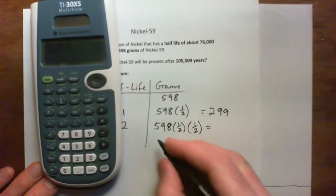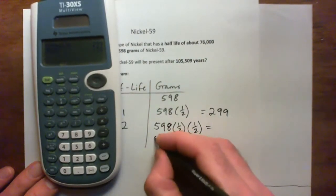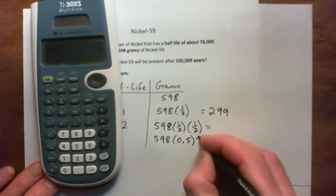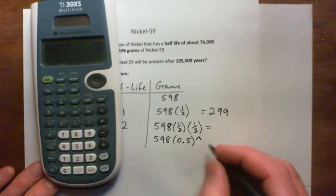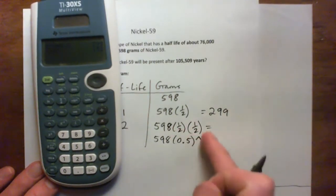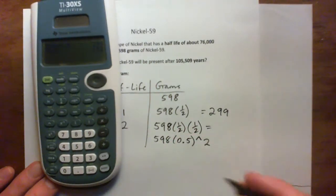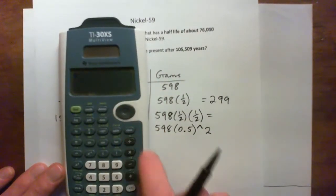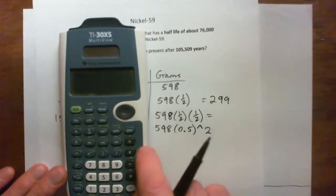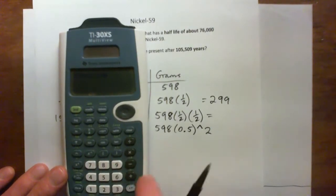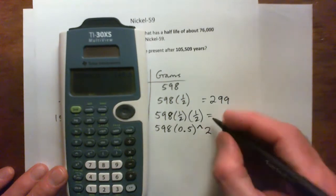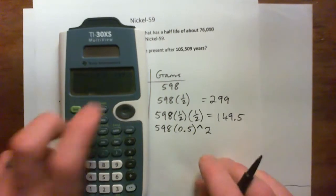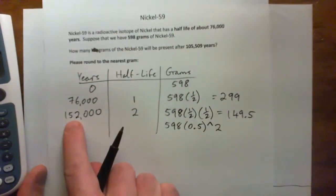Or you could write this as 598 times 0.5 to the power of 2. That's a half times a half is a half squared. Or in your calculator, you could put in a multiply sign. So I'm just going to go 598 times 0.5 to the power of 2, and that gives me 149.5 grams left after 152,000 years.